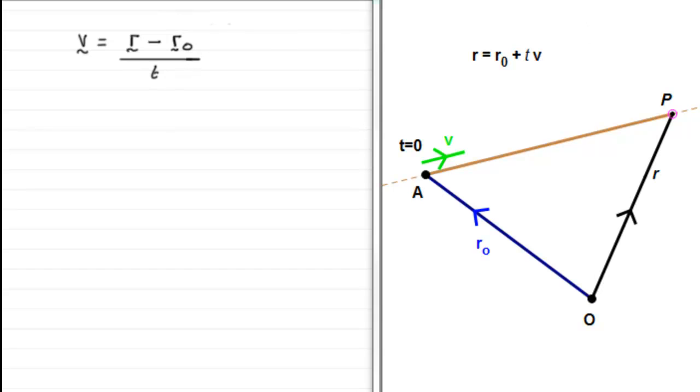So we've got our general formula now for velocity. It's the change in the position vectors divided by the time taken. We'll just do an example using this particular idea.